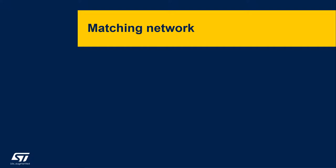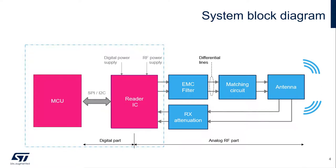The matching network in an NFC system essentially defines the analog and RF performance of the system. This is why it's so critical that it be designed efficiently and correctly. Let's start with a brief overview of a typical system block diagram. Here we see the digital portion that encompasses the MCU and a part of the reader IC. The interface to the reader is either SPI or I2C, and there's a digital and RF power supply applied to the reader.